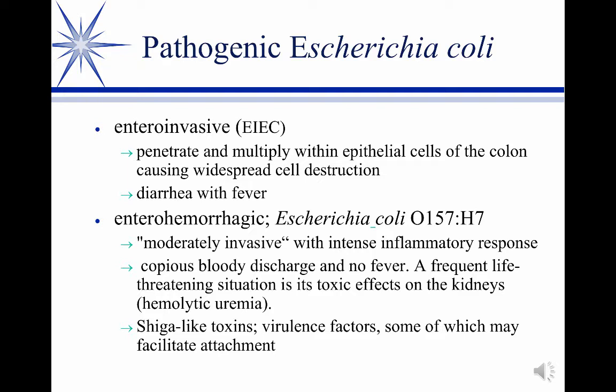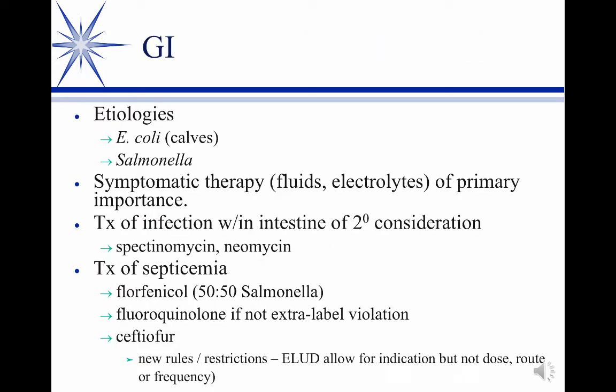Antibiotics do play a role, and a variety of things against E. coli would be effective. Basically, for E. coli and salmonella — the same things apply. Symptomatic therapy, mainly oral electrolytes, and treat the infection as a secondary consideration. Staying within the GI tract: spectinomycin if you can get it, or oral neomycin — both staying within the intestine.